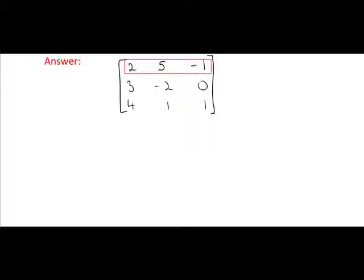To solve this determinant question, we start with the top row: 2, 5, minus 1. We take the first number, 2. Next, we cover the row that 2 is on. We cover the column that 2 is on.